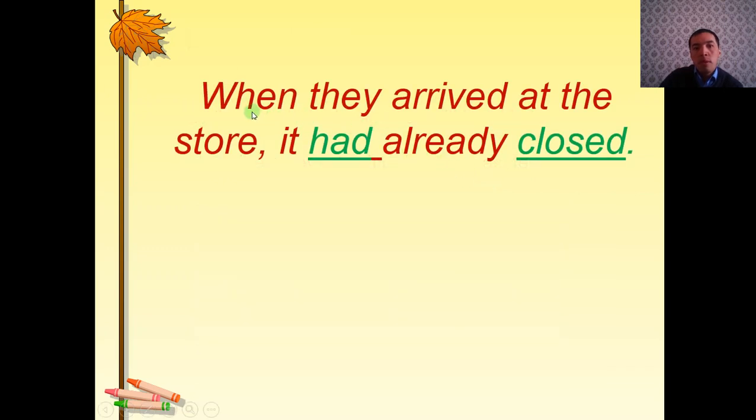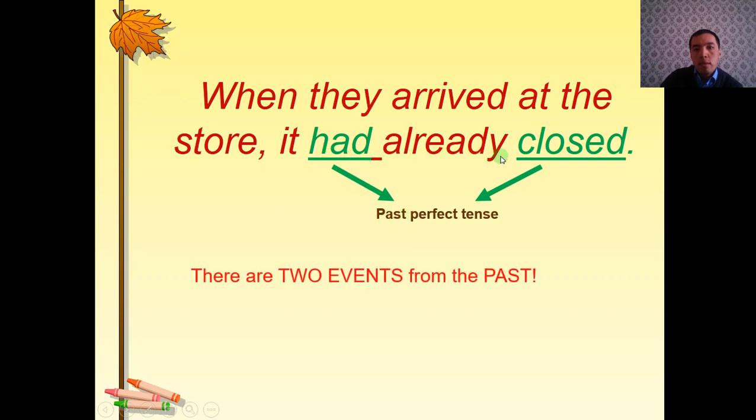Let's start with an example. When they arrived at the store, it had already closed. So this is the example of past perfect tense. Past perfect tense is had already closed. In this sentence, there are two events or two actions from the past. The first one is past perfect, the store had already closed. And the second event is past simple, they arrived at the store.